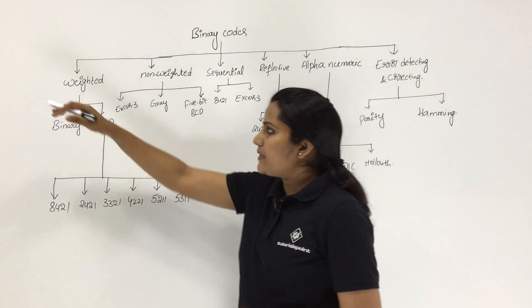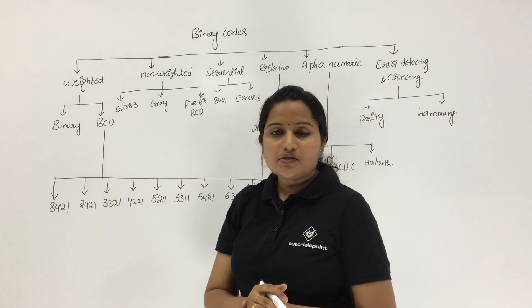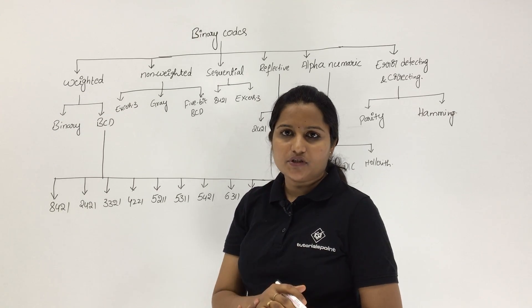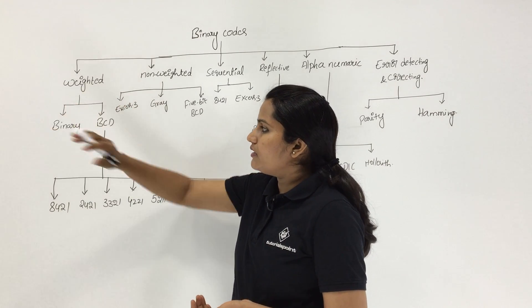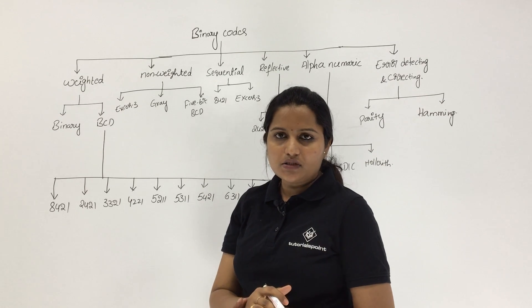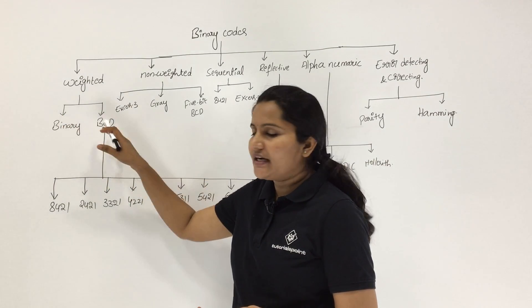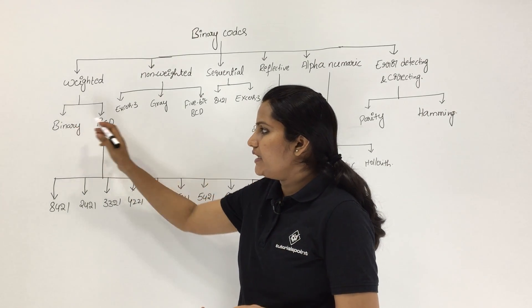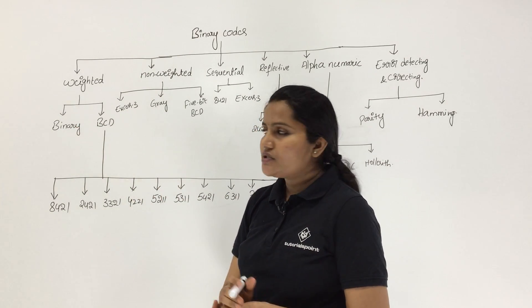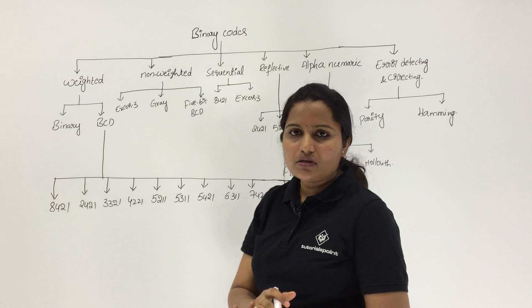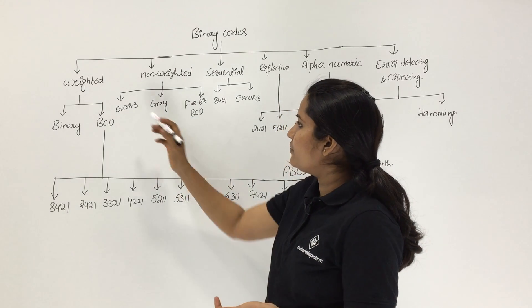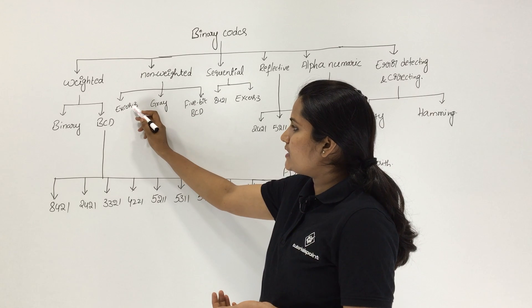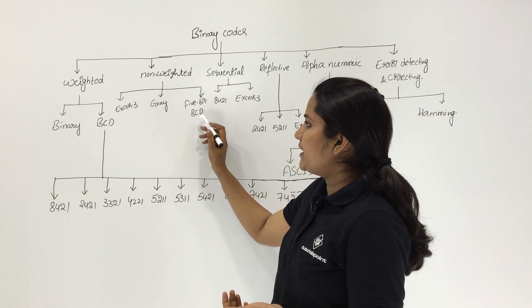Weighted codes are codes where the value depends upon the weights assigned to their positions. Weighted binary codes can be again classified into two types: binary and BCD. Non-weighted codes are also classified into three types: XS3, Gray, and 5-bit BCD.